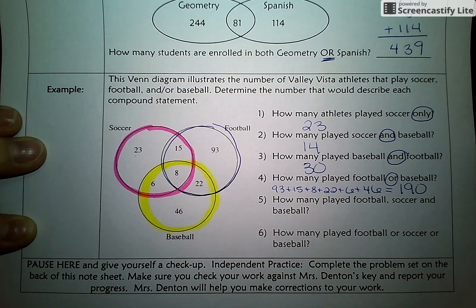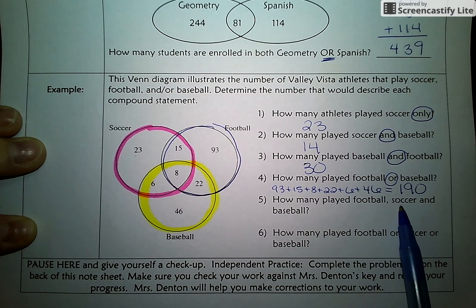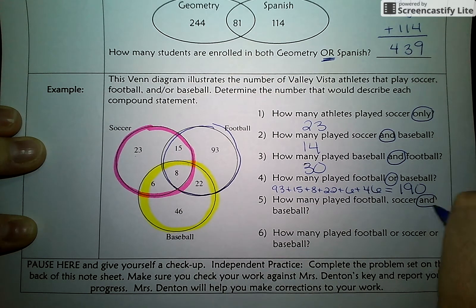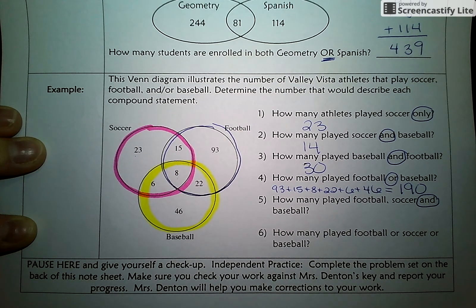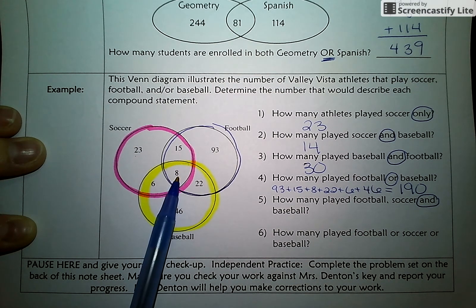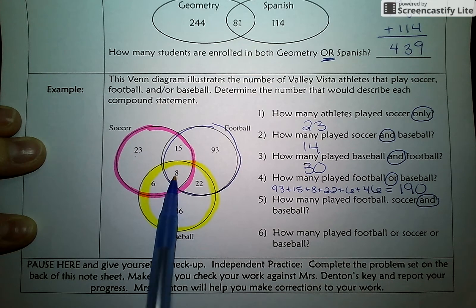A couple more example problems — same picture. How many played football, soccer, and baseball? Now we're looking for the ultimate overlapped zone: the zone that represents students who play all three sports, right in the middle of our Venn Diagram. These students are included in the football bubble, the soccer bubble, and the baseball bubble.